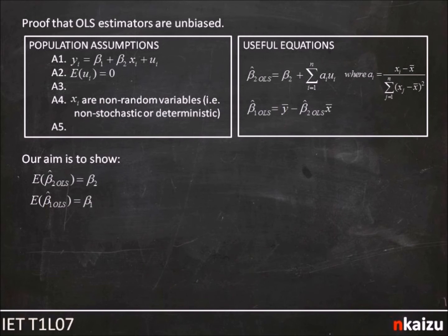We have two aims. The first is to show that our slope formula beta_2 OLS hat is unbiased, i.e. the expectation of beta_2 OLS hat is equal to beta_2. If you remember our definition of unbiasedness, it's that the expectation of the estimator is equal to the population parameter. This is exactly what we have here. And then once we've done that, we want to prove that beta_1 OLS hat is also unbiased. First, let's prove that the slope formula beta_2 OLS hat is unbiased.